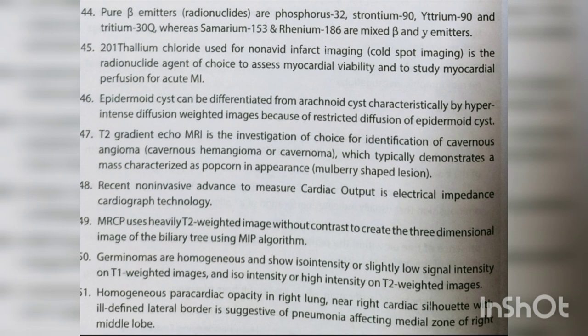T2 gradient echo MRI is the investigation of choice for identifying cavernous angioma, which typically demonstrates a popcorn or mulberry-shaped lesion. MRCP uses heavily T2-weighted images without contrast to create a 3D image of the biliary tree using MIP algorithm. Germinomas are homogeneous, showing iso- or slightly low signal intensity on T1 and iso- or high intensity on T2. Homogenous paracardiac opacity in the right lung near the right cardiac silhouette with an ill-defined lateral border is suggestive of pneumonia affecting the medial zone of the right middle lobe.